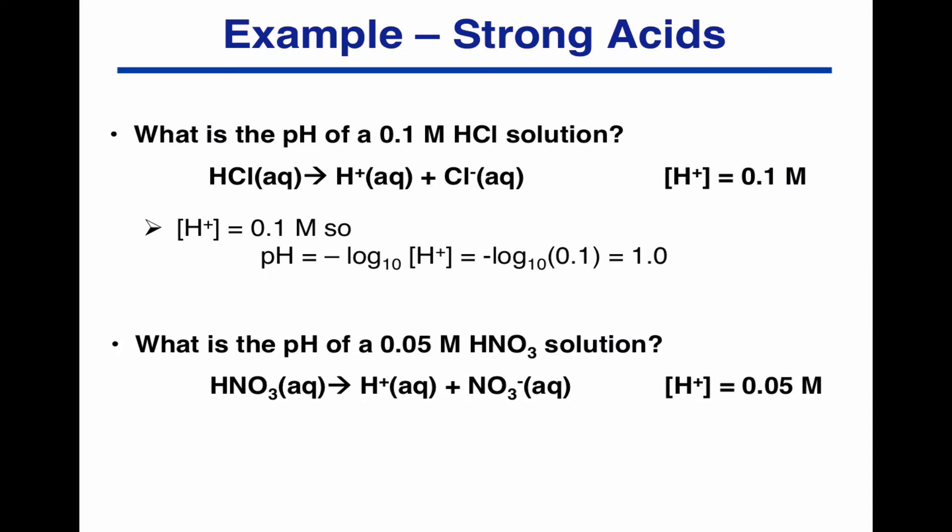If we're asked to work out the pH of a 0.05 molar nitric acid solution, it's a strong acid, and so we know it's split up completely. So the H plus concentration will be 0.05 molar and the pH is minus log to the base 10 of 0.05, which is 1.3.